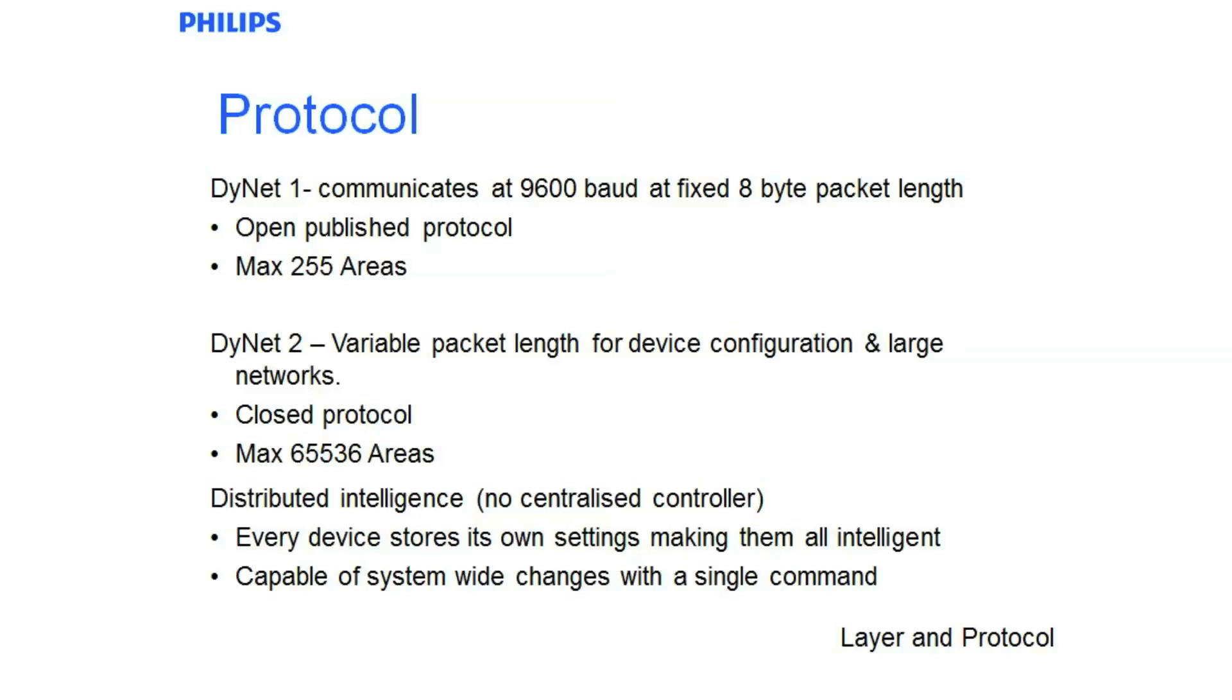Dynolite 1 has been around for over 20 years. It communicates at 9600 baud and has a fixed 8 byte packet length. Typically these are the messages that are put out by any field control panels or any sensors. It's an open, published protocol. Limitations are that there are a maximum of 255 areas and within each of those 255 areas there is a maximum of 255 channels. Although this may not sound like a whole lot, this is a huge number and we have been able to control many large museum spaces and large office buildings within the confines of that.